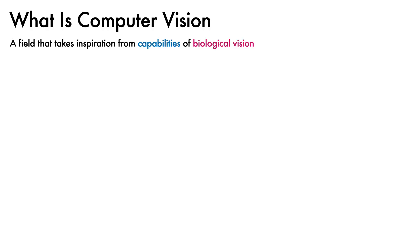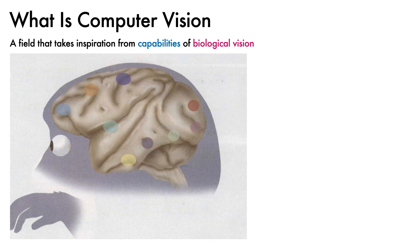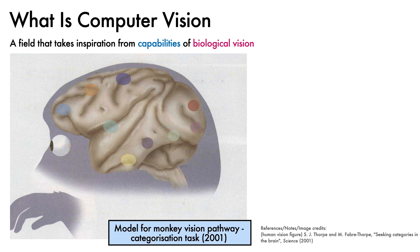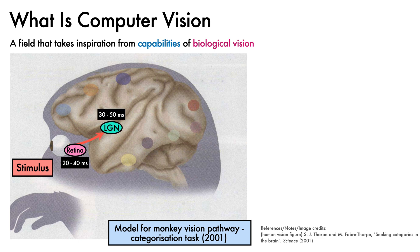Computer vision draws inspiration from the capabilities of biological vision systems. To give a sense of how evolution has tackled this engineering problem, here is a colourful model by Thorpe and Faberthorpe of the vision pathway of the monkey, a close relative of humans. In this model, the monkey is performing a categorisation task, such as choosing whether an image looks more like a dog or a cat. The processing begins with a visual stimulus reaching the retina, where, after 20-40ms, it is relayed onto the lateral geniculate nucleus, taking a further 10ms.